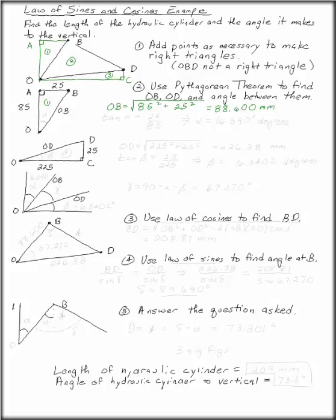We also need some angles. Let's call this angle at O alpha, and now we can use the tangent function. Tangent of alpha is opposite over adjacent, 25 over 85. Solve this using arctan, and you get alpha is 16.390 degrees.